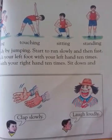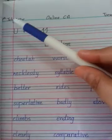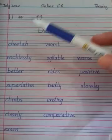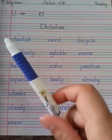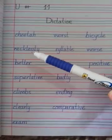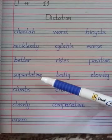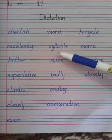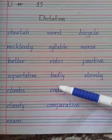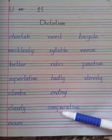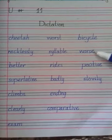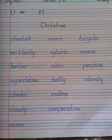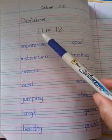اب next کام notebook پر ہے — open your English notebook and mention today's date. Today is 14th July 2020, online class assignment, the day is Tuesday. Unit 11 dictation words: recklessly, better, superlative, climes, clearly, exam, worst, syllable, writes, badly, ending, comparative, bi-second, worse, positive, slowly.